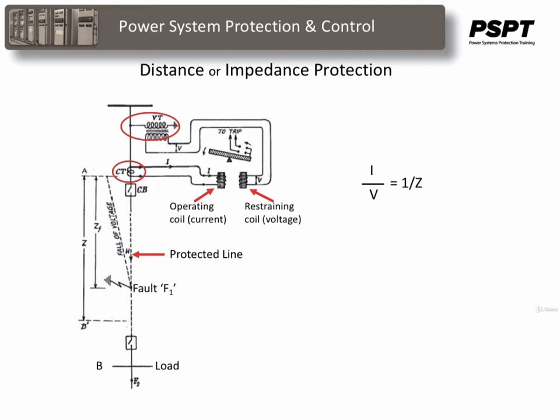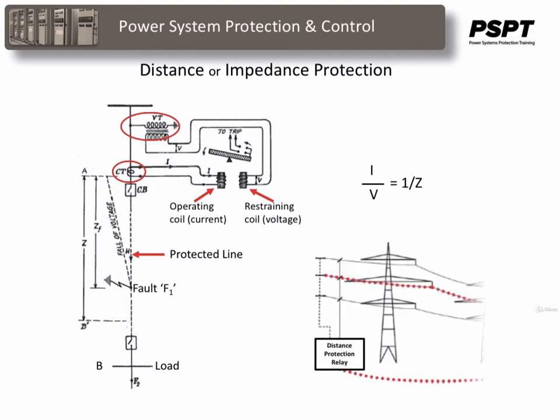The closer to the station the fault is, the less line impedance, the higher the fault current, and the greater the operating torque on the relay. Assuming that the impedance of the line is uniform, the impedance measured to the fault is proportional to the distance to the fault. Hence, such protection is called impedance protection or distance protection.